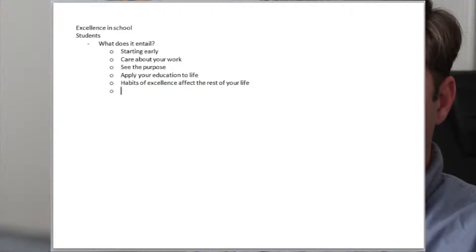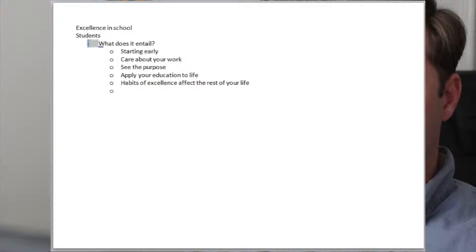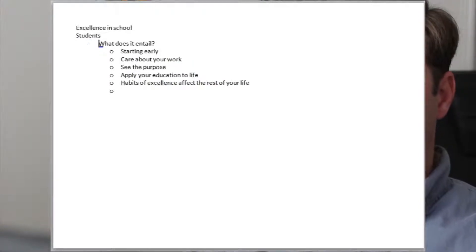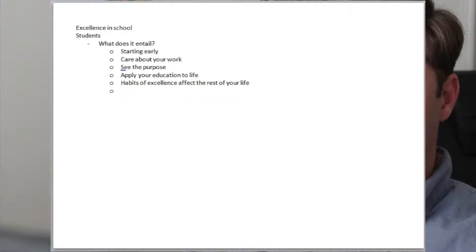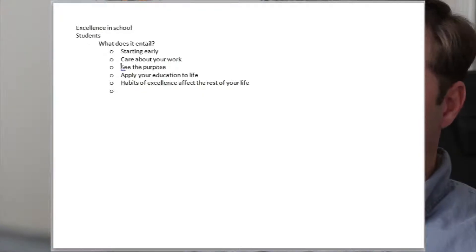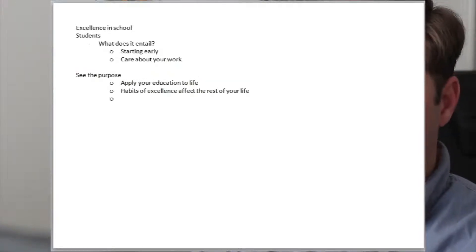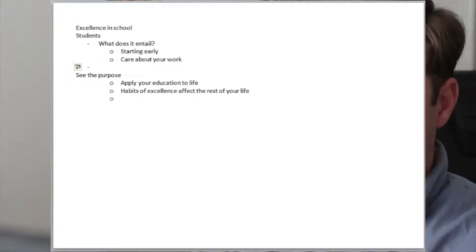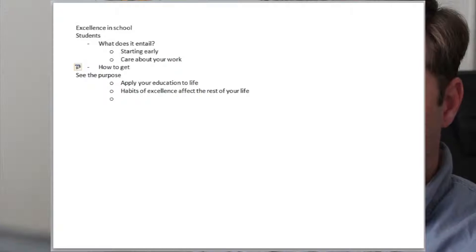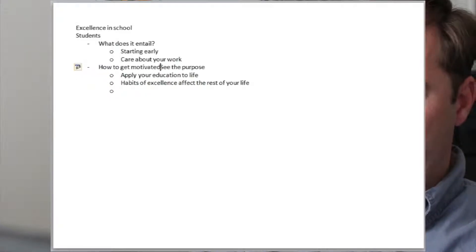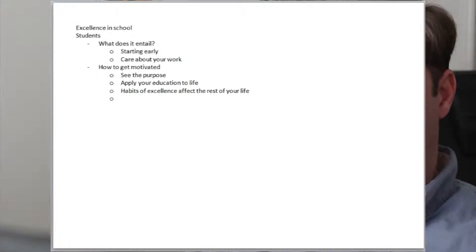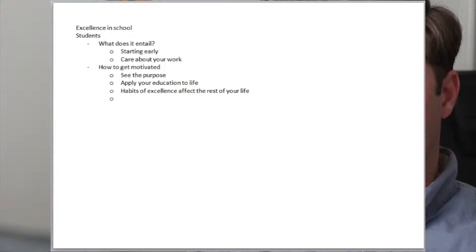You can see already that I'm getting away from where I started this outline. I made this point — what does it entail — and I said starting early, care, see the purpose. Is that really part of what excellence entails? I don't think so. We need another header here: this probably goes under 'how to get motivated about excellence.' See the purpose of it, apply your education to your life, show how habits of excellence will influence you.